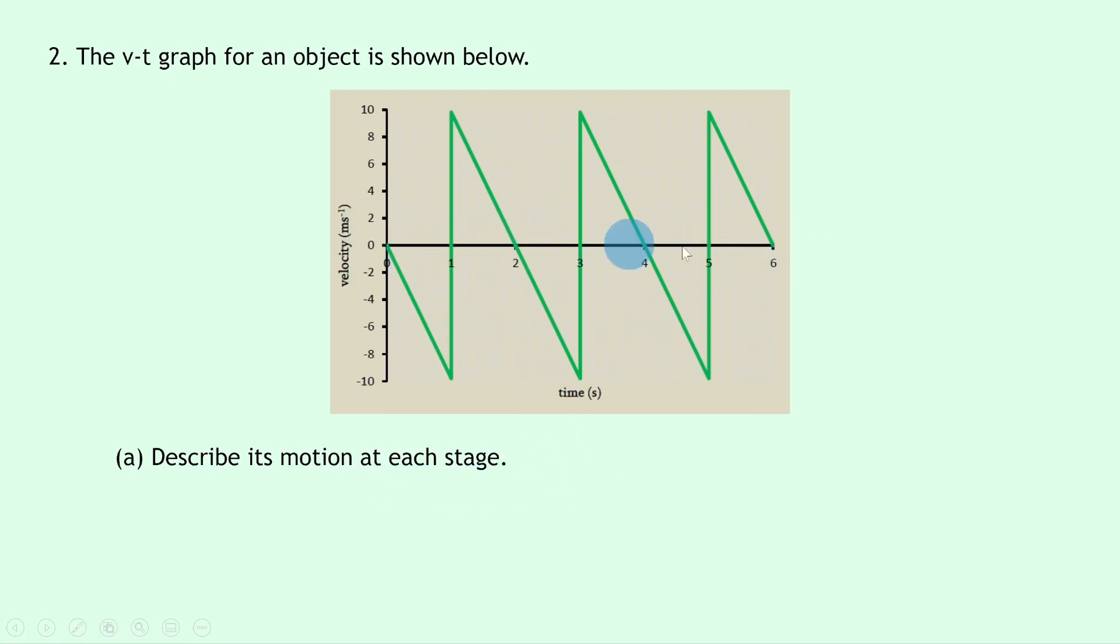Well again we're going to use the time segments here to help us describe each stage. First of all let's talk about zero to one second. Because the object is starting at rest, then it must be increasing in velocity even though it's doing so negatively here. So we're going to say that from zero to one second, it's a uniform acceleration down to here.